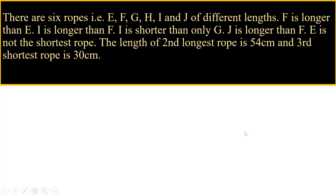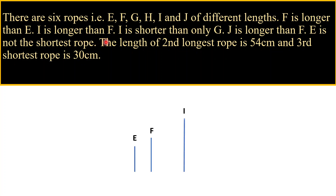There are six ropes — E, F, G, H, I, and J — of different lengths. F is longer than E. I is longer than F. I is shorter than only G, which means G will be the longest rope of all six ropes.